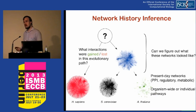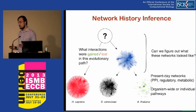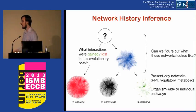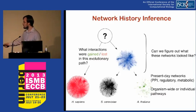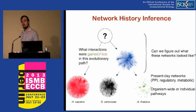So what is the network history inference problem? Basically, we observe a number of extant interaction networks — these could be protein interaction networks, regulatory networks, or perhaps even metabolic pathways — and we want to figure out what the ancestral networks looked like. What was the common ancestor of these two networks, or along a particular evolutionary path, what interactions were gained or lost?